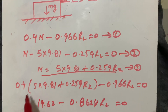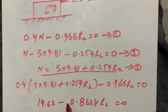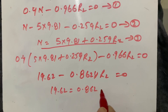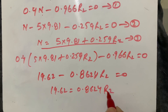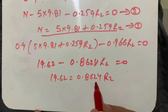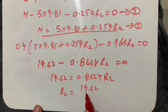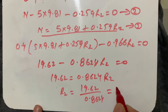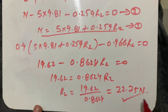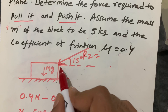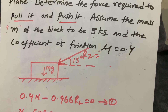Moving the negative term to the right-hand side: 19.62 = 0.8624 R2. Dividing: R2 = 19.62 / 0.8264 = 22.75 Newtons. This is the R2 value used to push the resting wooden block. I hope you understood this — thank you so much for watching.